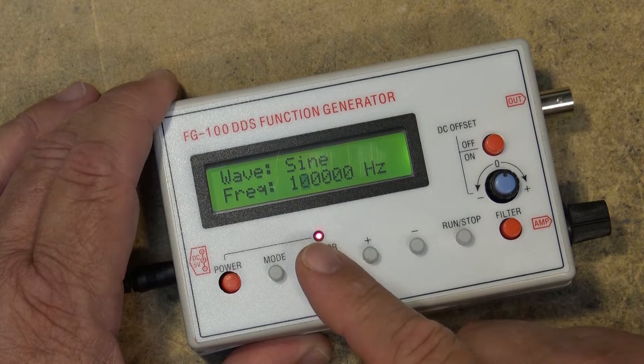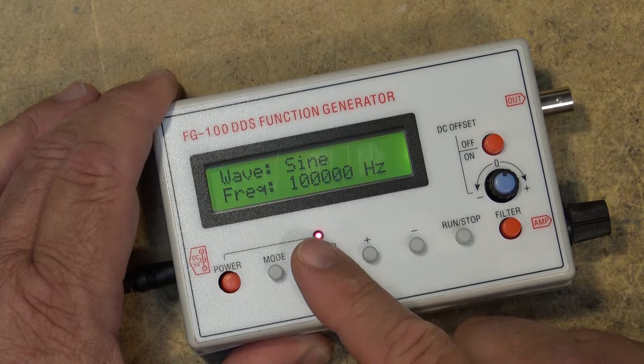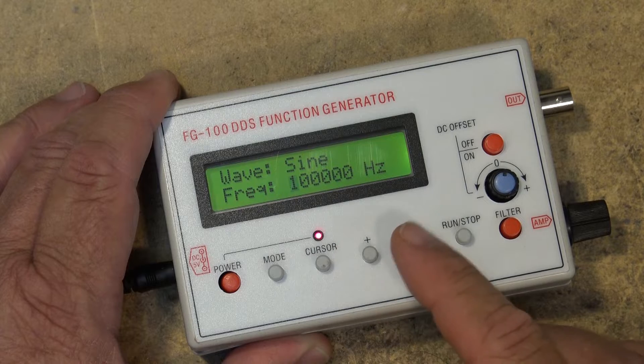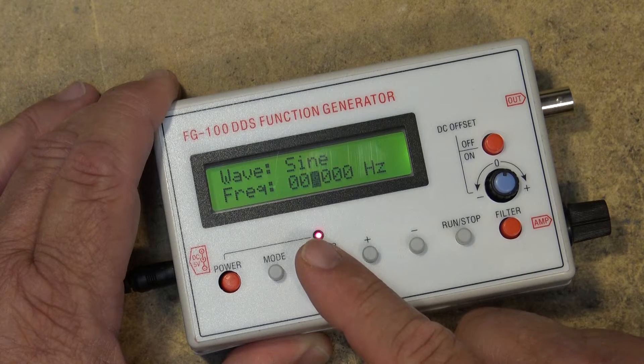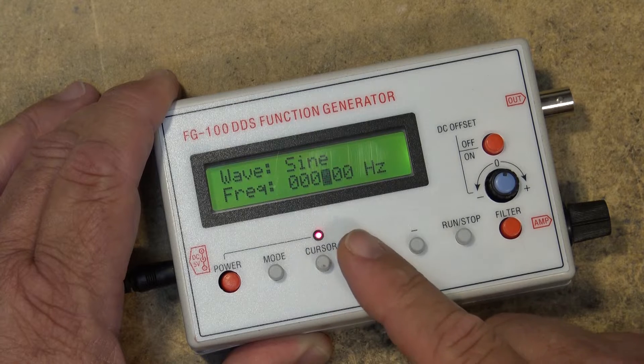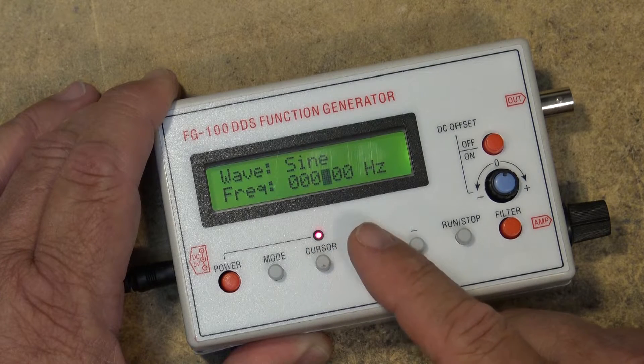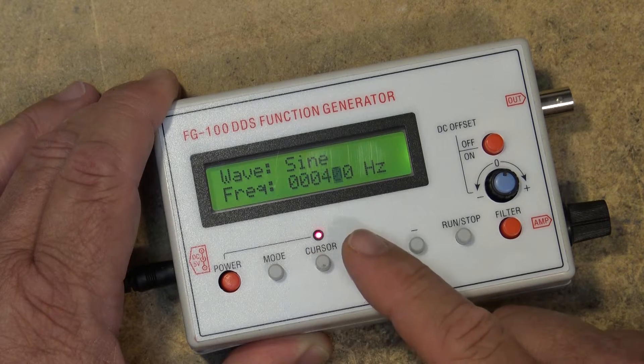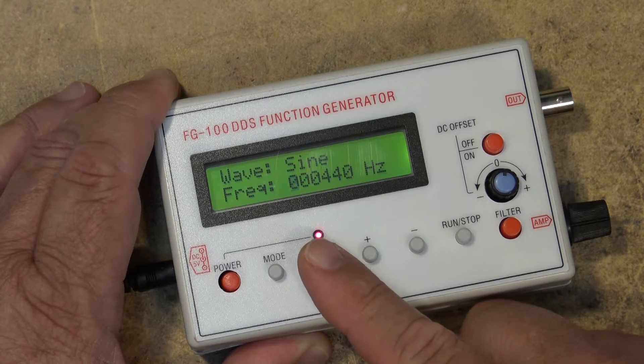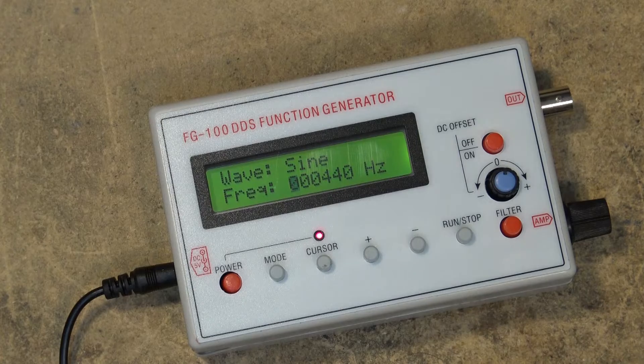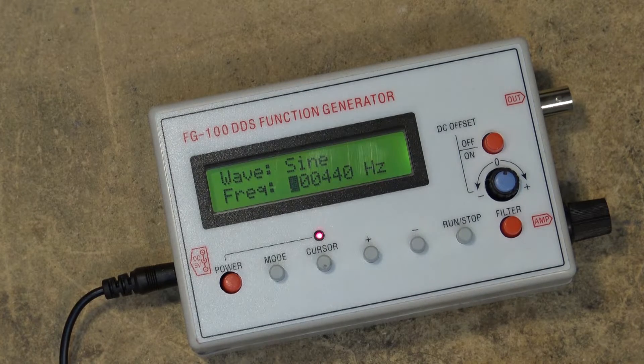If I press the cursor button this way I can select the frequency. So if I want to take that down, say I want to create a 440 Hertz sine wave. Now when I turn this thing on to run I should have a 440 Hertz tone.